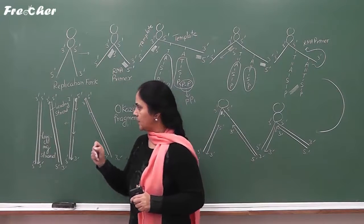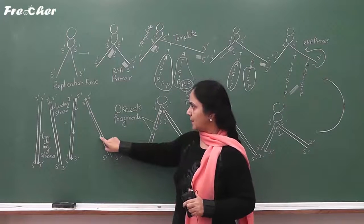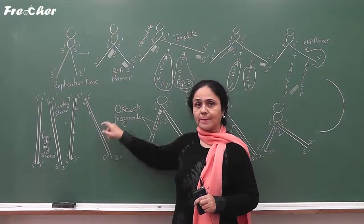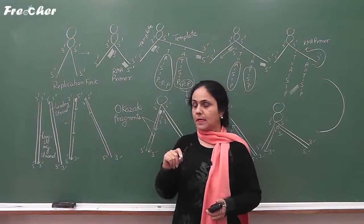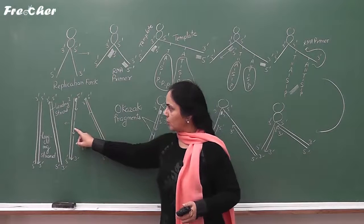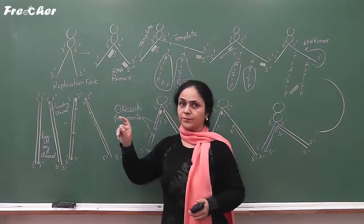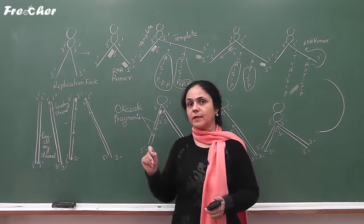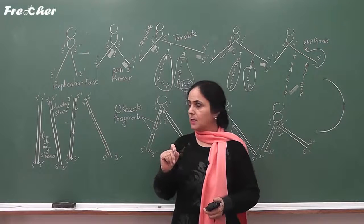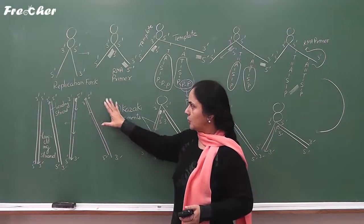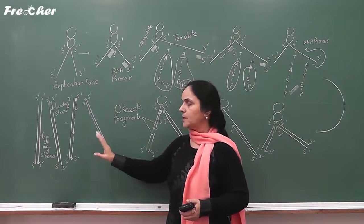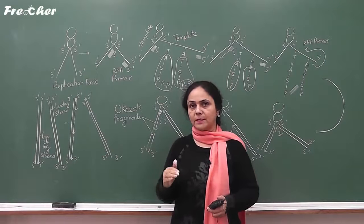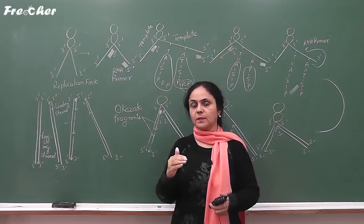Another important point is that the leading strand is formed on the template having polarity 3'→5', and the lagging strand is formed on the template having polarity 5'→3'. When new strands are formed and two DNA molecules are produced, one process which occurs simultaneously is proof reading of the newly synthesized DNA molecule.